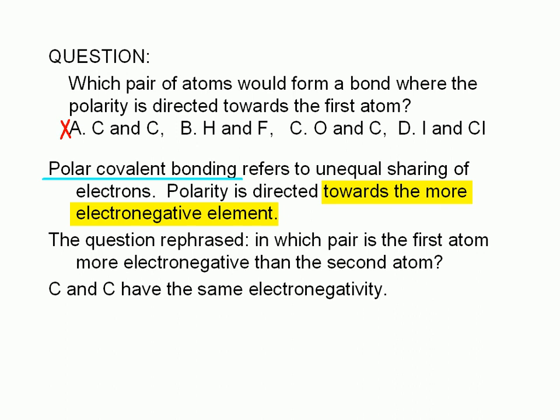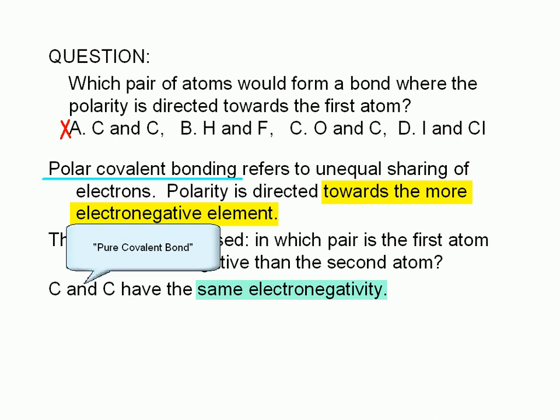Obviously, choice A is wrong. There is no reason why electrons would prefer one carbon atom over another. Two carbon atoms have the same electronegativity. Electrons would be shared equally between these two atoms and the bond is called a pure covalent bond.